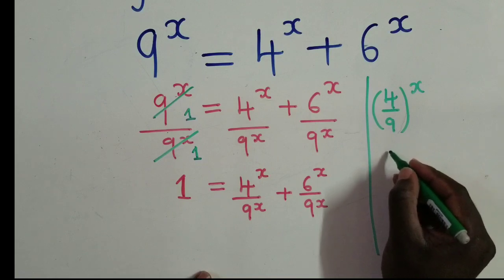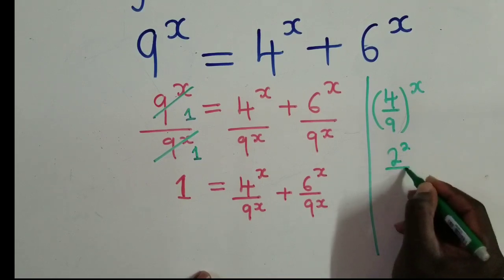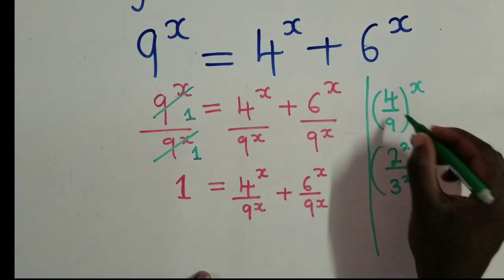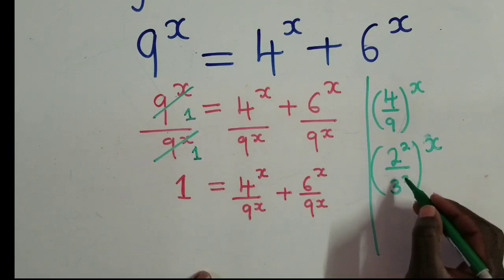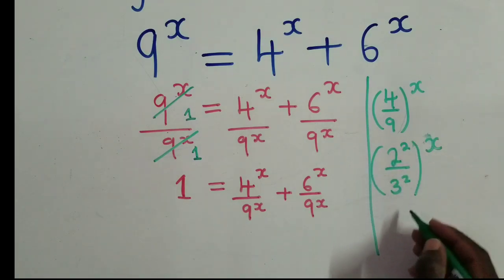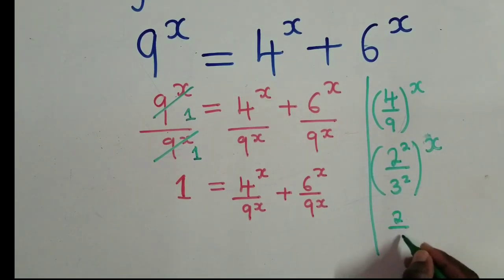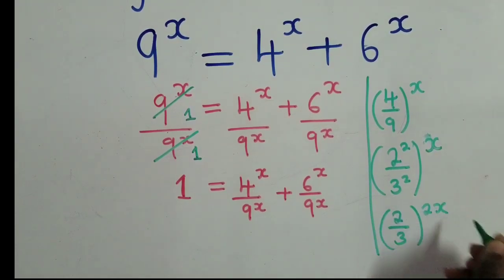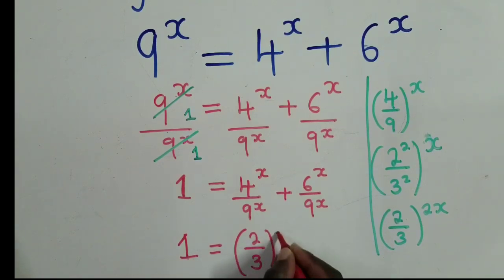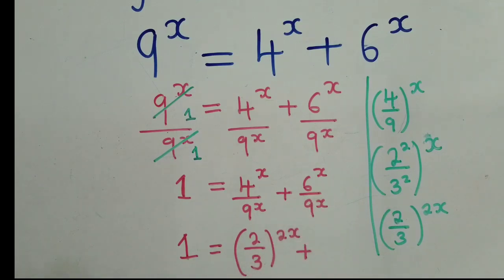Now, inside here — (4/9)^x — this is the same as (2/3)^2x. What we have here and here are the same. Since this is a power, it can come out, so we remain with (2/3)^2x. So I'm going to write: 1 equals (2/3)^2x plus something.